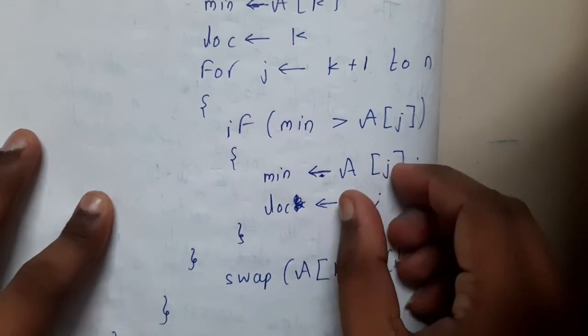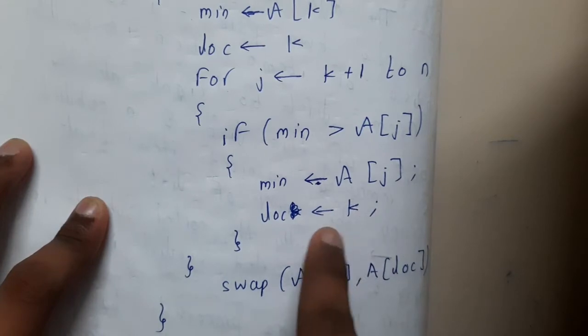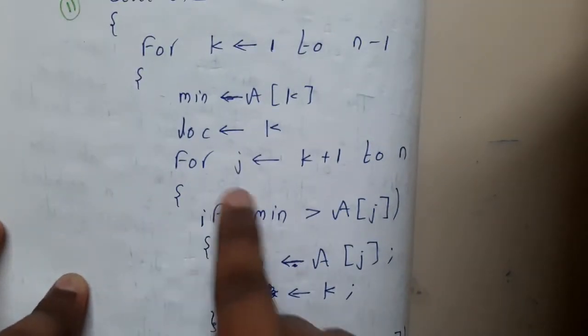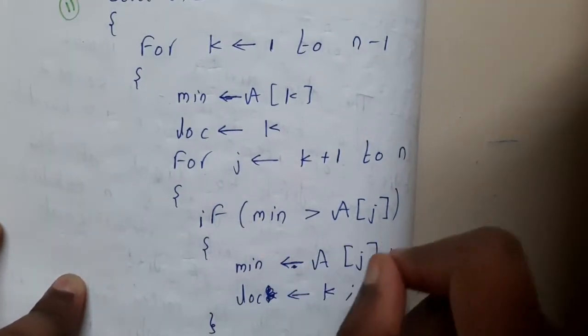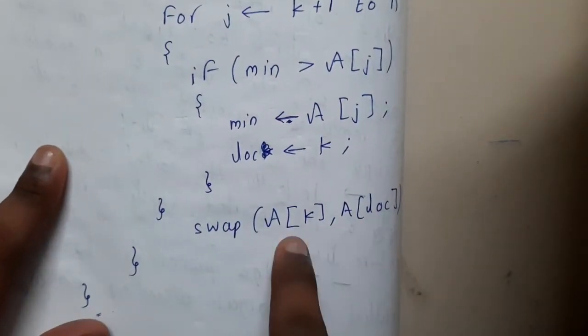You store the value of minimum as A[j] because A[j] is the minimum, and you store that location also. You continue this process until you find the smallest element. At the end, you swap the smallest element with its original position.